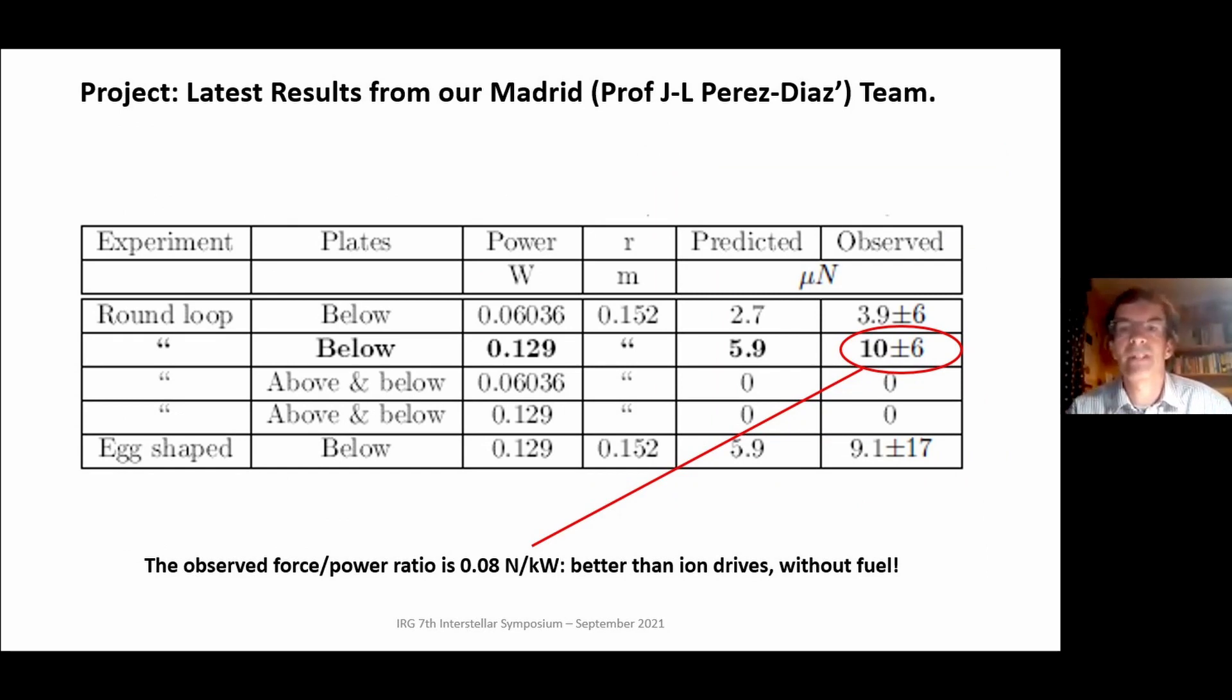So I funded a team in Madrid, Spain at the University of Alcala under Professor Perez Diaz, and they have some positive results. The most interesting result is shown in bold here. When the power is boosted, the power into the laser was 0.129 watts, the radius of the loop was about 15.2 centimeters, Quantized Inertia predicts that there should be a thrust of about 6 micronewtons, and we saw a thrust averaged over a few experiments of 10 plus or minus 6 micronewtons, which is consistent with it. One point here is that this represents a force to power ratio of 0.08 newtons per kilowatt, which is better than the ion drives used in satellites at the moment, and it's doing this without fuel. This just requires electricity energy from solar panels, for example.